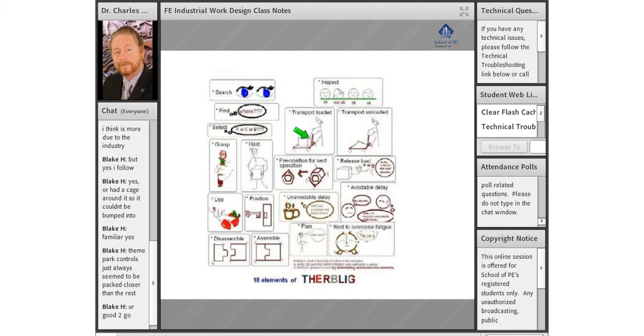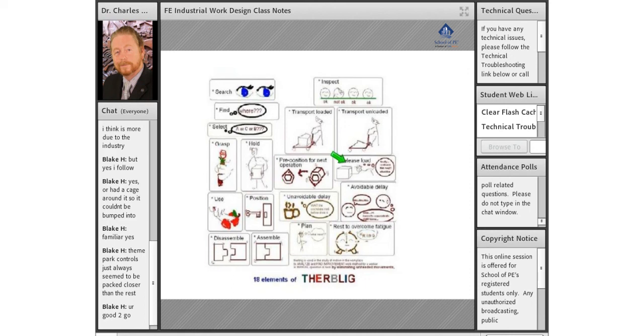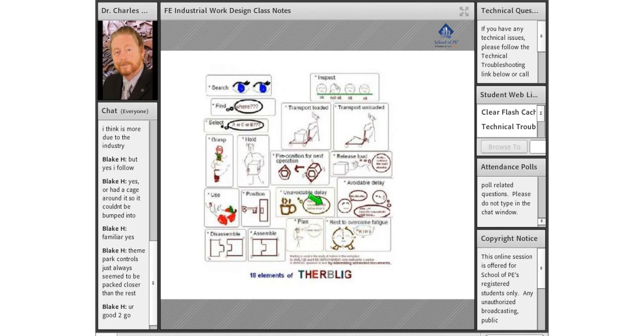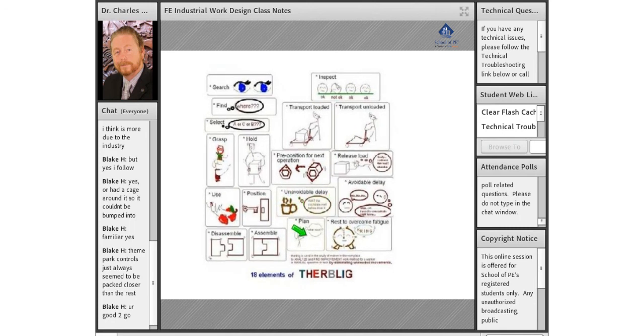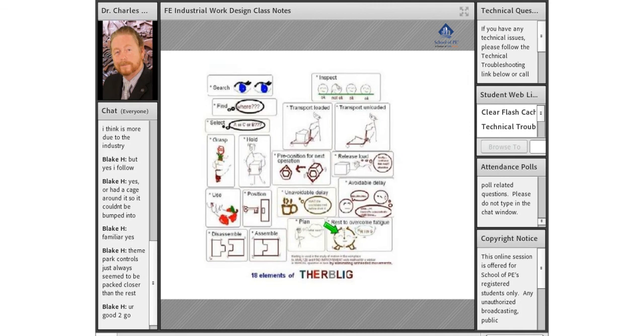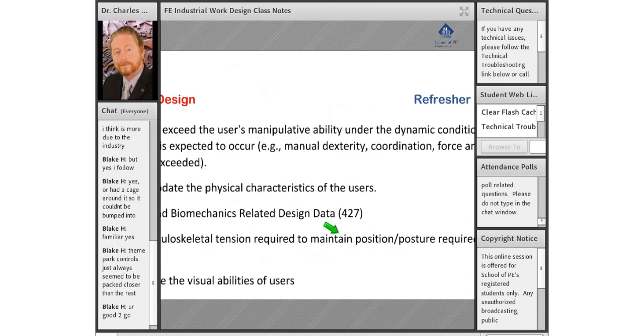What we were looking at down here: there might be the need to pre-position something for an operation, and they can release a load. Then we've got the unavoidable delay and we have avoidable delays. Planning has to take place, and then we have to accommodate rest to overcome fatigue, which goes back to musculoskeletal tension.